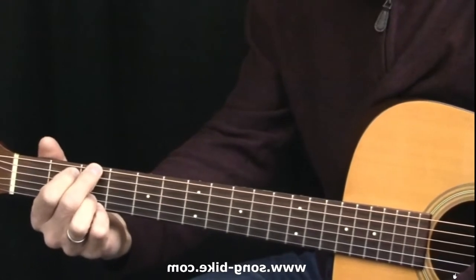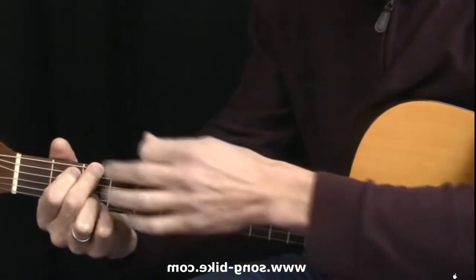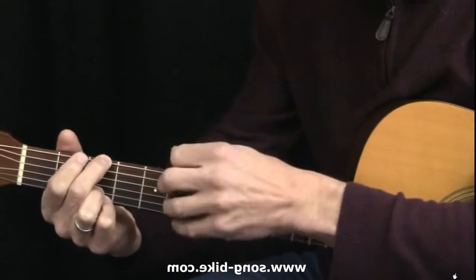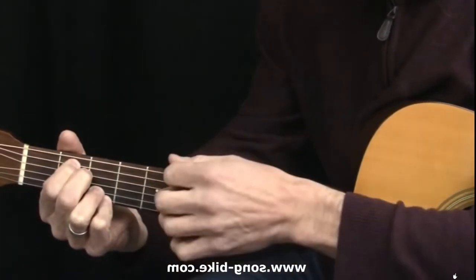How about a nice walk down and a walk up, a way to connect the G and the E minor? Watch this, I'm going to hit the sixth string. Now watch this on the sixth string. You're going to do it in reverse.